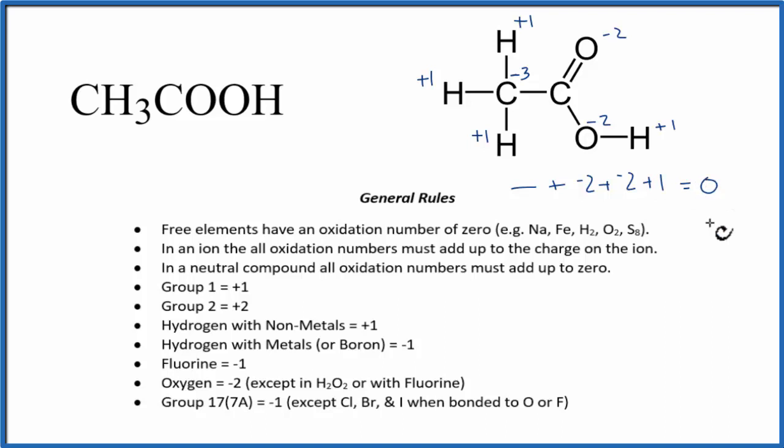So some number plus these equals zero. A plus three would all work out to zero. And that means the oxidation state for this carbon is plus three.